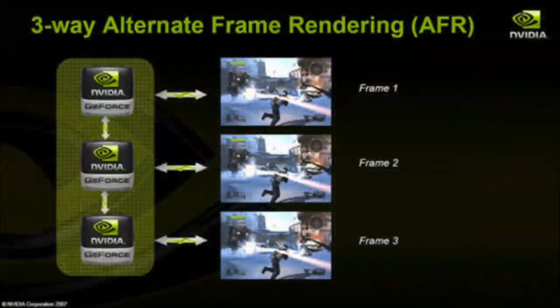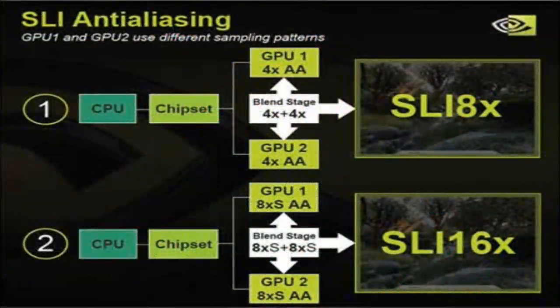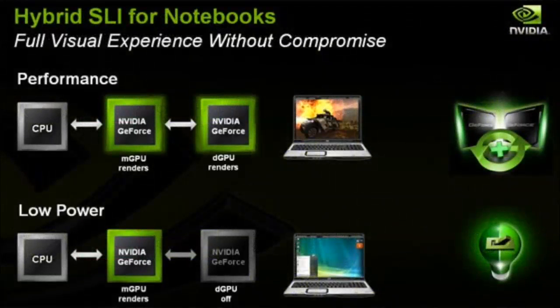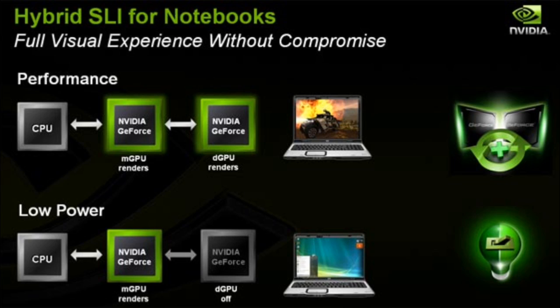The second way SLI can do rendering is taking turns rendering frames — one card does one frame and the other does the next. The third way has nothing to do with frame rates: you can split the anti-aliasing workload between however many SLI cards you have. You don't generally get a frame rate increase from this, but image quality improves significantly. And lastly, hybrid SLI from NVIDIA — first available in laptops and now on desktop chipsets — lets you balance load between on-board graphics and an off-board video card, shut one off to save power, or combine the two for increased performance.